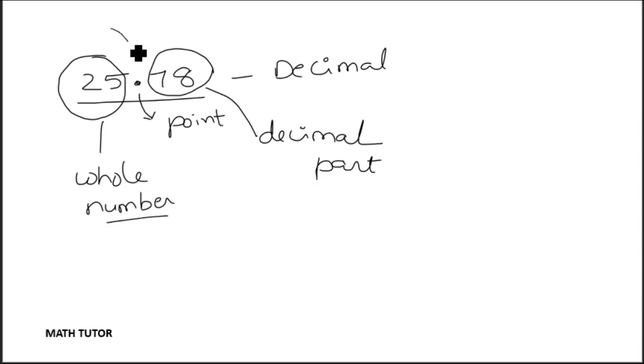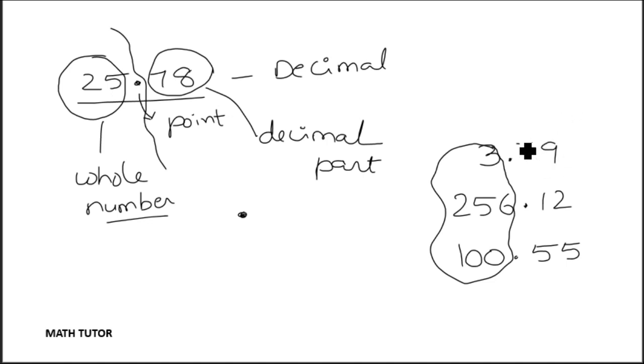The whole number part and the decimal part are separated by this point. So whenever you come across this, it's a decimal number. You can have other examples like 3.79, 256.12, or 100.55. The part on the left side of the point is called the whole number part, and after the point we call it the decimal part. For example, 79 is a decimal part, 12 is a decimal part, and 55 is a decimal part.